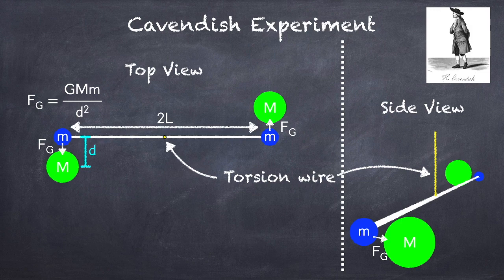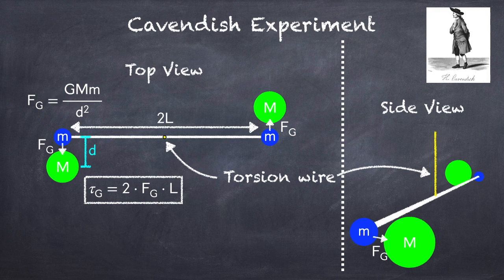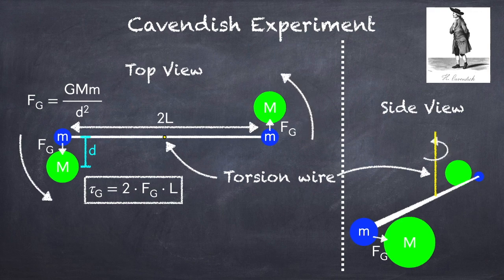And the way we're going to do this is we're going to use torque. Now torque is just the force multiplied by the lever arm, which is the distance from the center to where the force is applied. So in this case, that's going to be the force of gravity times half the length of the rod, which is just L. And then the whole thing is multiplied by 2, because you've got one on each side. This is going to cause the rod to rotate in a counterclockwise direction as viewed from the top.